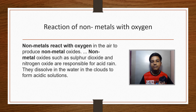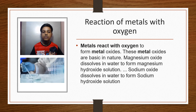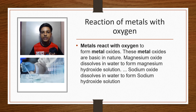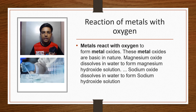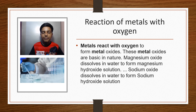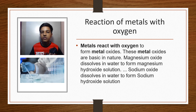In the reaction of metals with oxygen, metals react with oxygen to form metallic oxides. For example, if you leave magnesium in contact with oxygen, it becomes magnesium oxide. These metallic oxides — such as magnesium oxide and sodium oxide — are basic in nature. If you dissolve them in water, you form magnesium hydroxide or sodium hydroxide solution.